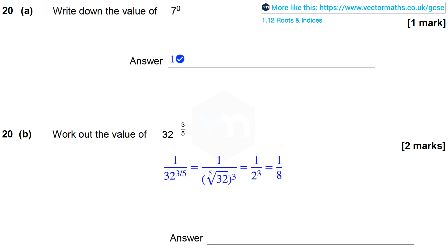In part b, to work out the value of 32 to the power of minus 3 fifths, I recall that this is the same as 1 over 32 to the power of positive 3 fifths. And this is defined to be equal to 1 over the fifth root of 32 raised to the power 3.